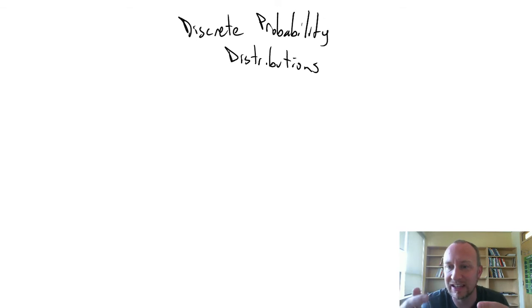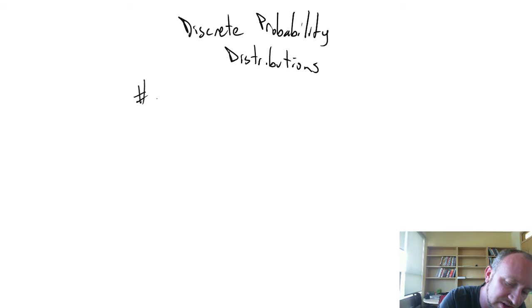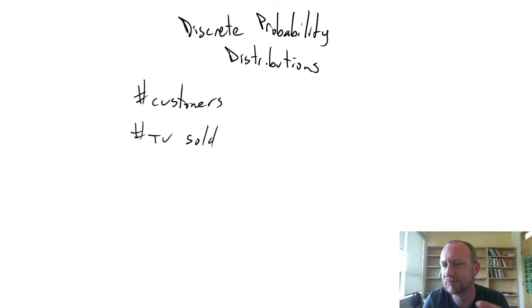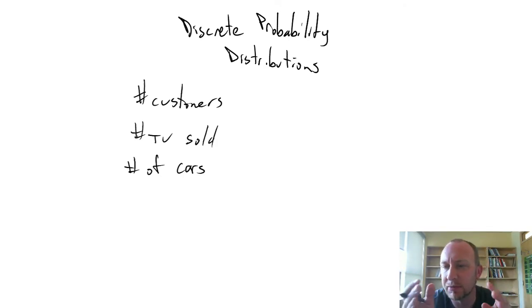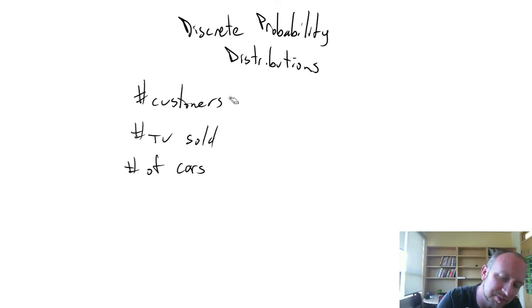First, I'm hoping you remember from the first module when we were talking about different types of data. Different types of data contain different amounts of information and have to be analyzed in a specific way depending on the type of variable. One distinction we made was discrete variables versus continuous variables. Discrete variables exist in whole numbers - things like number of customers, number of TVs sold, number of cars. These are non-divisible, as opposed to continuous variables like distance, time, weight.